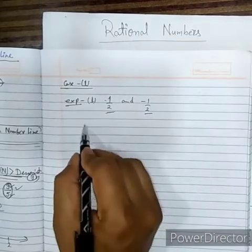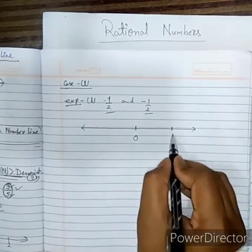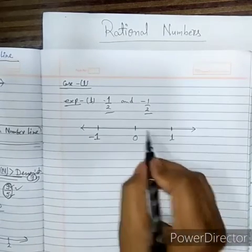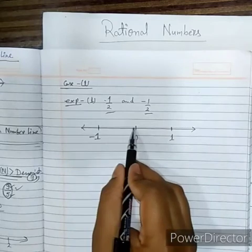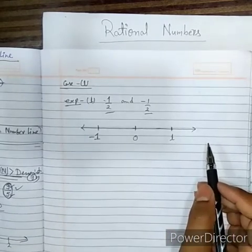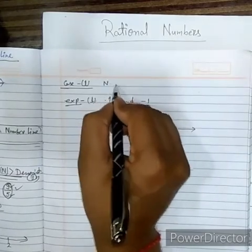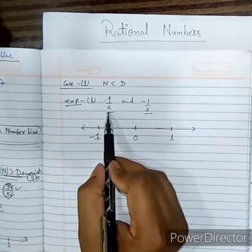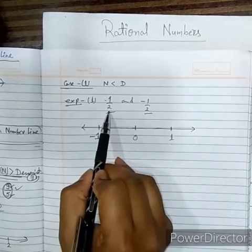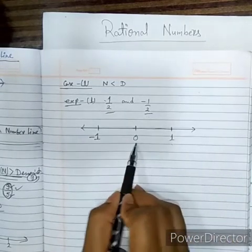We have to represent 1 by 2 and minus 1 by 2 on a number line. We draw the number line with 0, 1, and minus 1 at equal distances — this length must always equal that length. If the number is in the first condition, where numerator is less than denominator, a positive number lies between 0 and plus 1, and a negative number lies between 0 and minus 1.